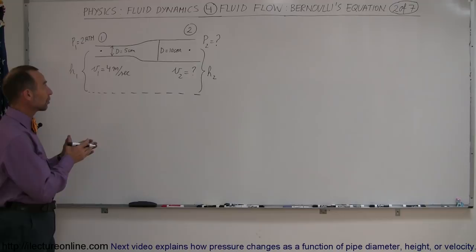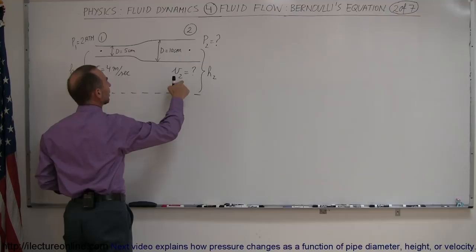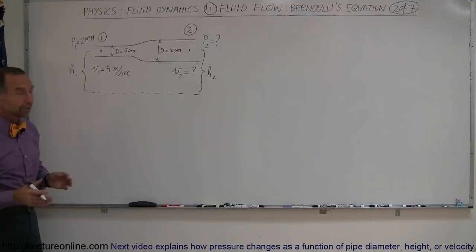Our next example in Bernoulli's equation is a pipe where the diameter changes. Here we have a pipe where the water is flowing at 4 meters per second, then the diameter doubles to 10 centimeters, and so the velocity decreases. What would be the resulting pressure at that point?